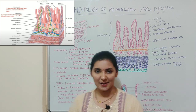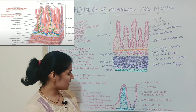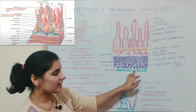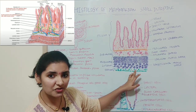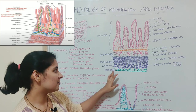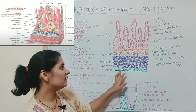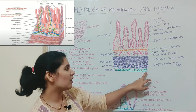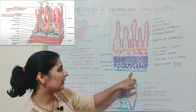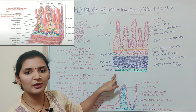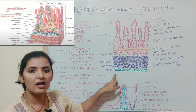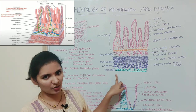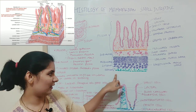The first layer is serosa. As you can see in this diagram, serosa is the outermost layer, which is made up of a thin layer of connective tissue surrounded by a layer of mesothelium. Mesothelium is nothing but a layer of epithelium.